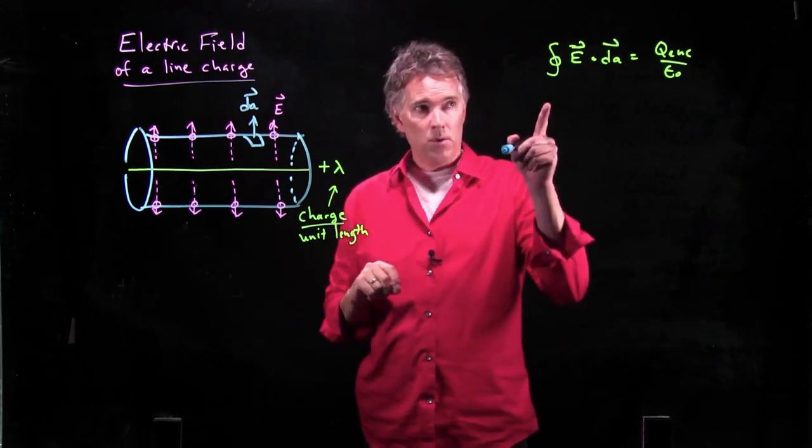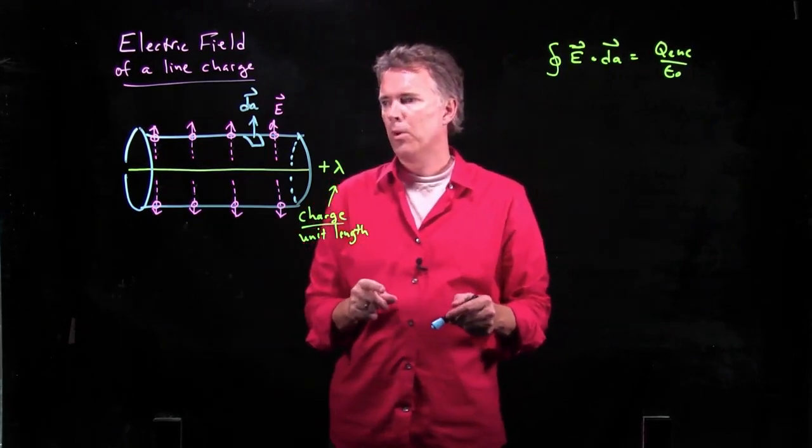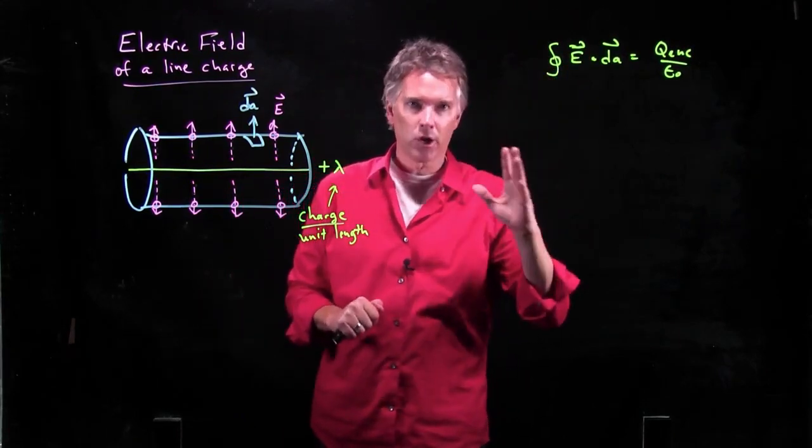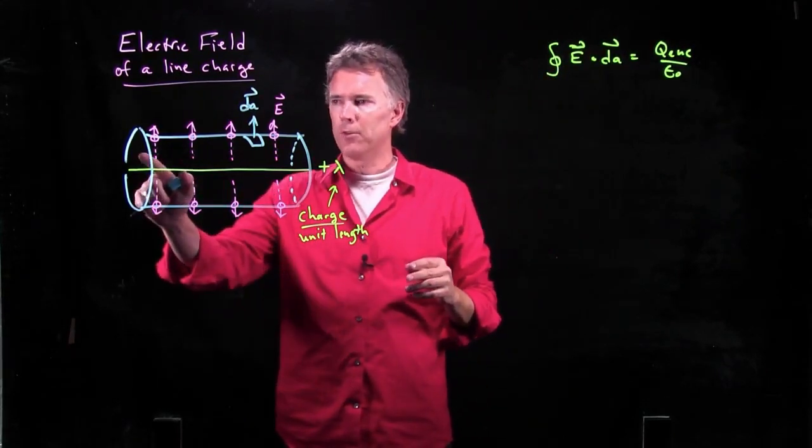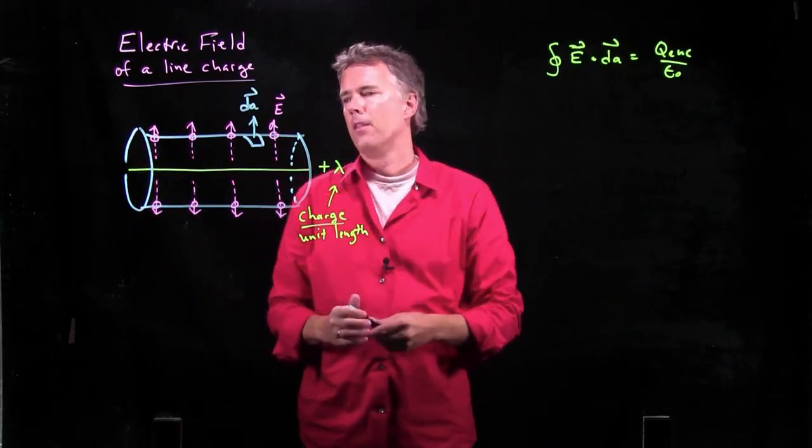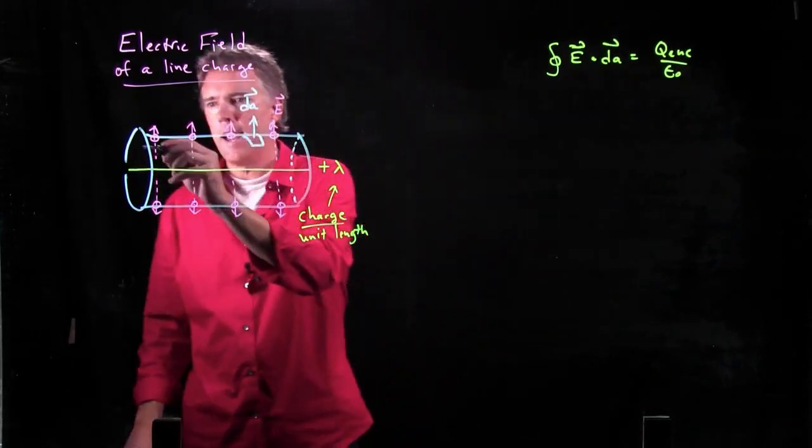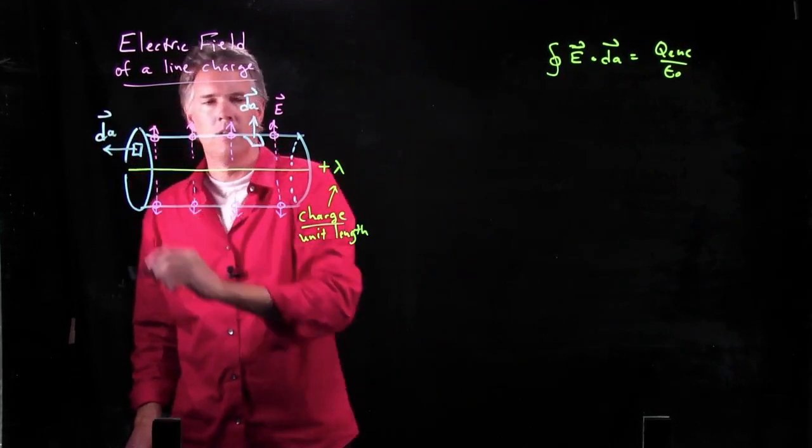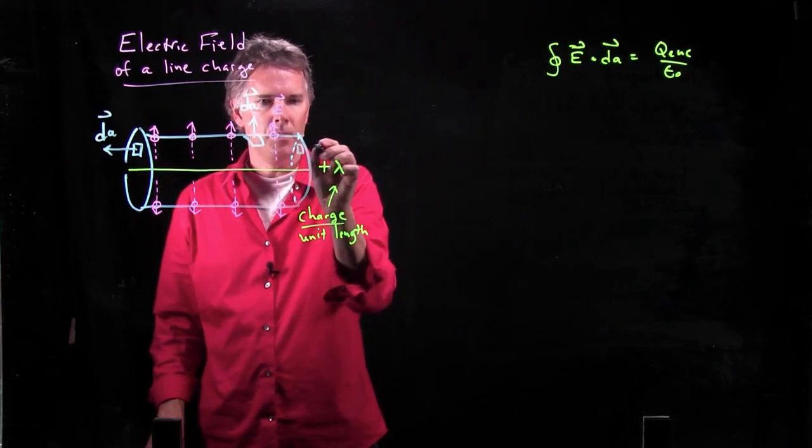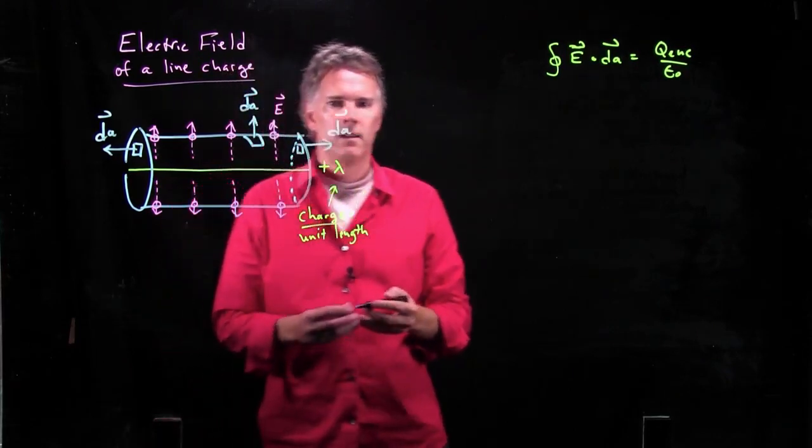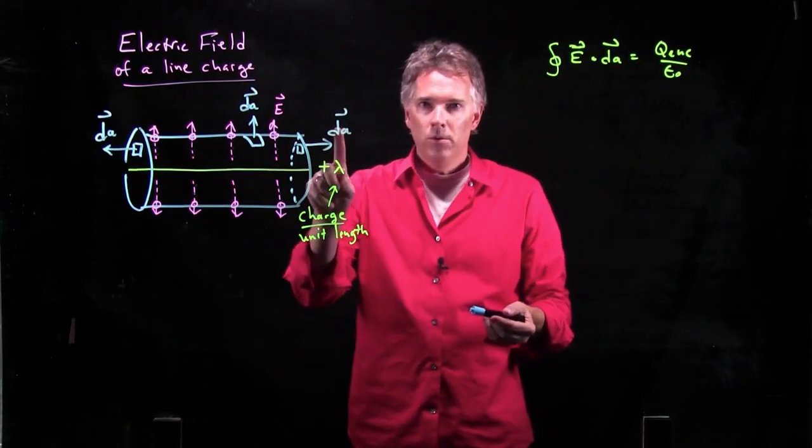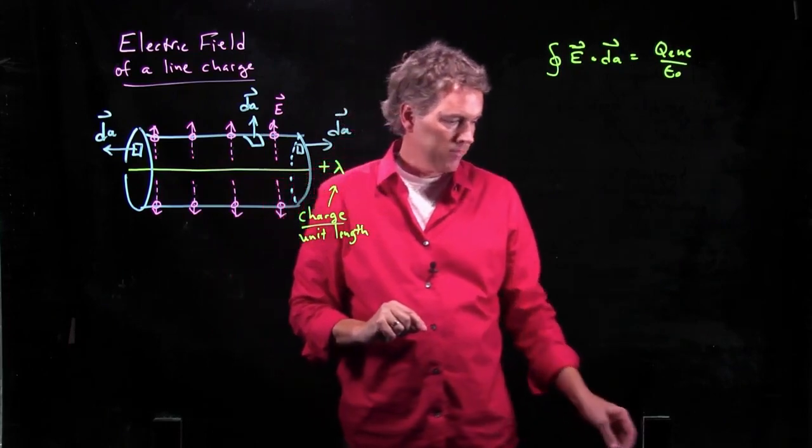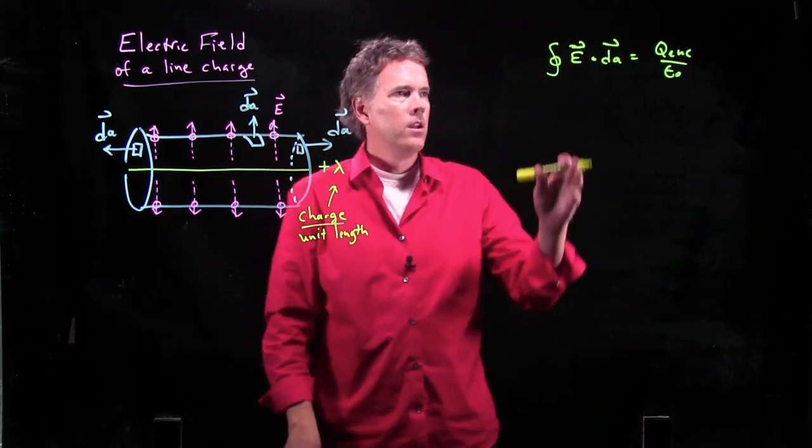Almost there, right? We're almost there, except we have to worry about the closed surface. This is an integral over the entire closed surface, and so we have to worry about the end caps. The end caps will have a dA that is pointing in that direction. And over here, it will be pointing in that direction. And those are orthogonal to the electric field, and so we're going to see that they don't, in fact, contribute to our integral.